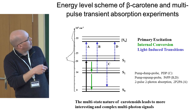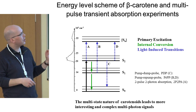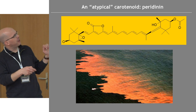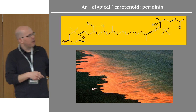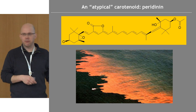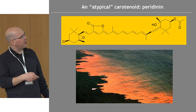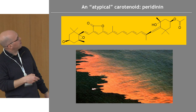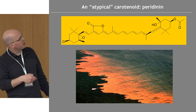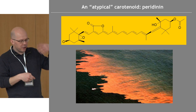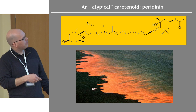Peridinin is a funky carotenoid — it not only has the conjugated double bond chain but has all these extra oxygens. It's found in algae and used as a main light-harvesting pigment. That pigment is embedded in a protein called PCP — peridinin-chlorophyll protein — which contains a number of pigments whose job is to collect solar light and pass it to the reaction center of the alga to help it do photosynthesis.